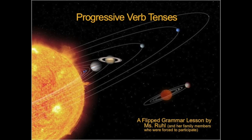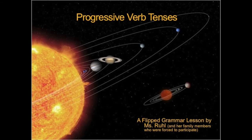Hello again, students. This is your flipped grammar lesson for StoryTown lesson 26. This lesson is about the progressive verb tenses. For this activity, you need your WISC worksheet and a pen or a pencil. Then on your WISC worksheet next to Unit of Study, please write Progressive Verb Tenses. And then in the W section, write when and where you watched this video. Now we're ready to get started.